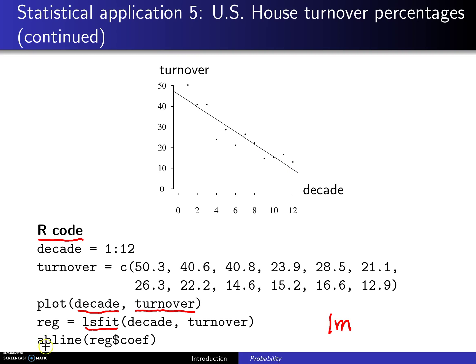Finally, if you call abline with REG extracting the coefficients, you will get this line plotted right here. At least visually, it looks like the slope is negative for that regression line, and there may be a couple of explanations for that. You always like to go beyond just the statistics and look for an explanation.